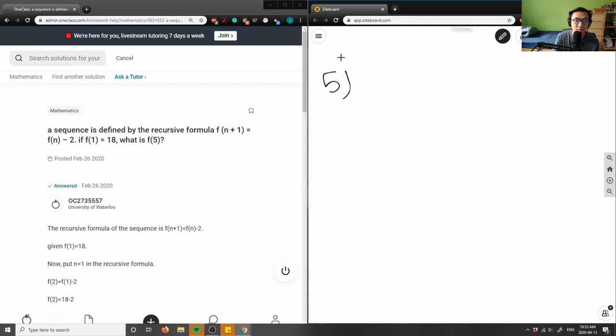Let's hear this question 5. So I have a recursive formula which is f(n+1) equals f(n) minus 2. And if we're saying here f(1) is 18, what is f(5)? If f(1) equals 18, then what is f(5)?